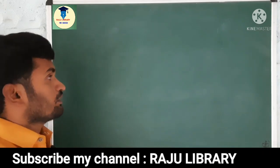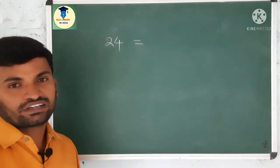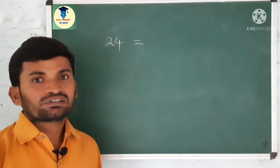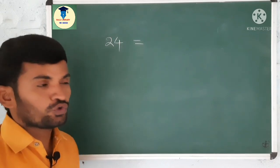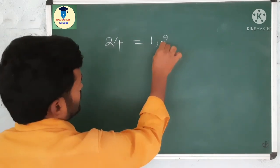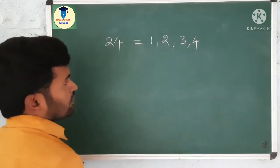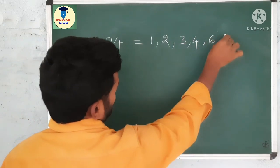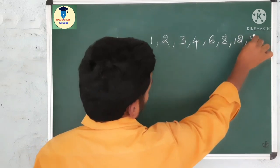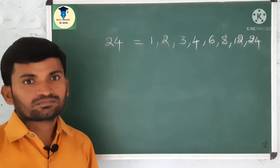Let us find the factors of 24. How can we find the factors of 24? It means in which tables 24 will come — those numbers we have to write. In the 1 table: 1×24 is 24. Next, 2×12 is 24. Next, 3×8 is 24. 4×6 is 24. 6×4 is 24. 8×3 is 24. 12×2 is 24. 24×1 is 24. So these are the factors of 24.